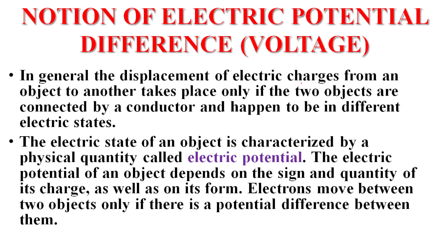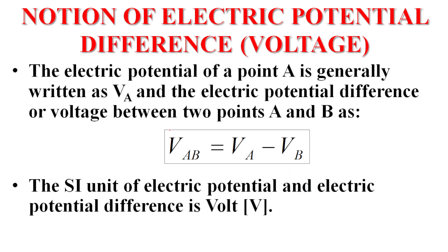In general, the displacement of electric charges from one object to another takes place only if the two objects are connected by a conductor and happen to be in different electric states. The electric state of an object is characterized by a physical quantity called electric potential, which depends on the sign and quantity of charge as well as on its form. Electrons move between two objects only if there is a potential difference between them.